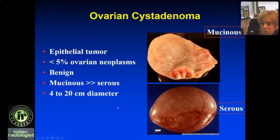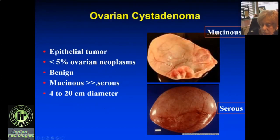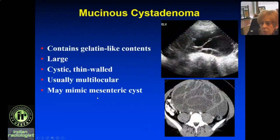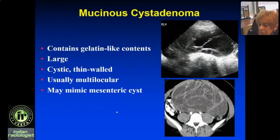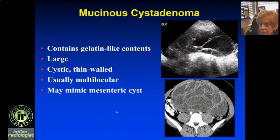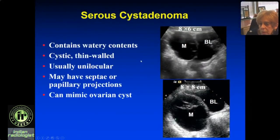The other cystic lesion we see is the cystadenoma. It's not really common — it's five percent of ovarian neoplasms. This is an epithelial tumor, and in children they're benign. Mucinous types occur more than serous, and they're big — kids are small and these are huge. The mucinous one has a lot of septations; it's multilocular because it has a lot of gelatin within it, with thin walls. It can look like a mesenteric cyst, which is the alternative diagnosis. Just remember: in a girl, if you see a cystic or solid mass in the pelvis or lower abdomen, look at the ovaries.